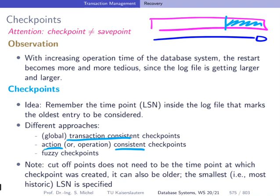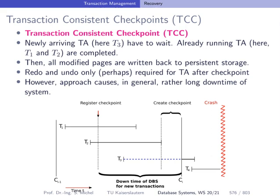The idea behind transaction-consistent checkpoints is very simple. At some point in time, the system wants to initiate the creation of such a checkpoint. What the system then does is allow the running transactions to complete and not accept any new transactions. That means transaction one and two, which are running at the time of the checkpoint registration, are allowed to finish, and transaction three, which is a new transaction, is not allowed to start — it gets postponed to after the checkpoint is created.